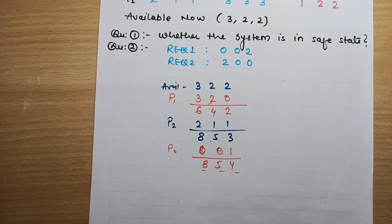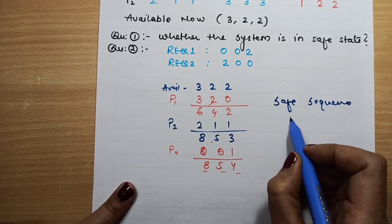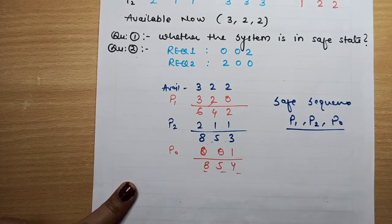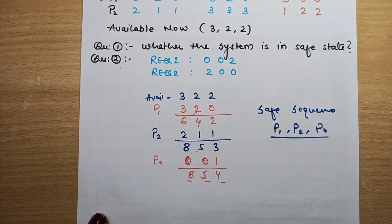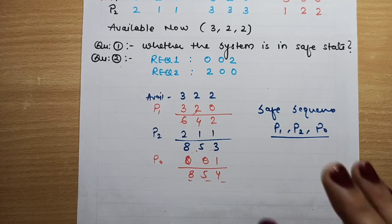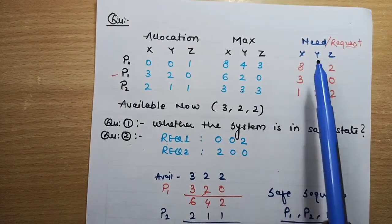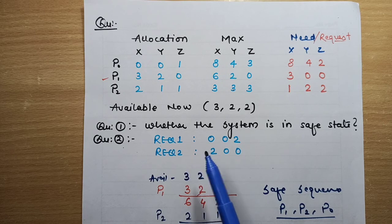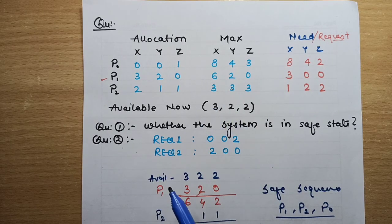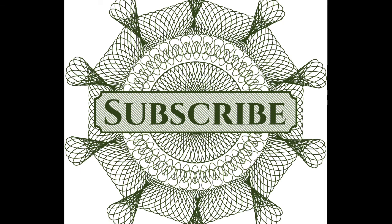We have found the safe sequence: P1, then P2, then P0. This is the order in which the processes can execute without leading to deadlock. This is how we find the safe state of a system. The next question involves additional requests made by some processes — we then check whether fulfilling those requests keeps the system in a safe state. Thanks for watching, and do watch all the operating system videos uploaded on my channel.